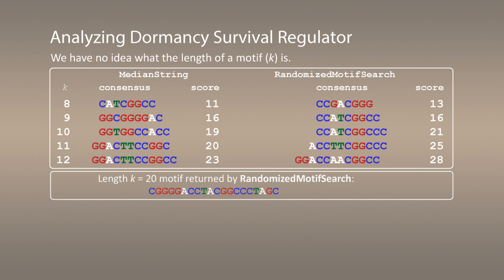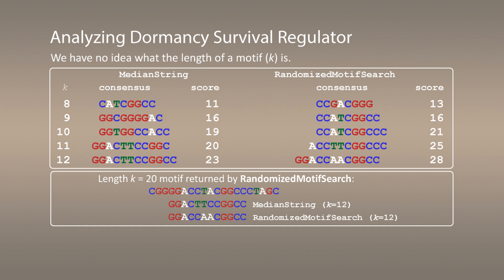You can see that there are similarities between the 12-mer found by median string, 12-mer found by randomized motif search, and 20-mer found by randomized motif search. Which one is correct?